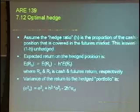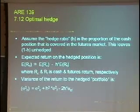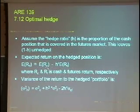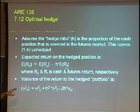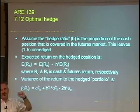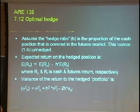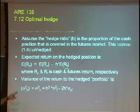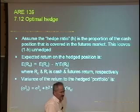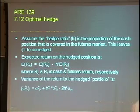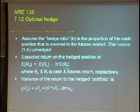So when we set up our portfolio, we have a cash position RC and a futures position RF — that just indicates the return on cash, which you can view as the price change. The return to the portfolio, we call it RH, is equal to the return on the cash position — it might be 10% — minus H, where H is the hedge ratio, which is the fraction of the cash position that's hedged.